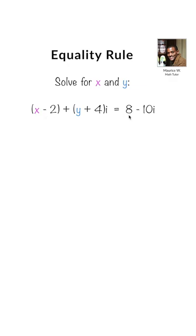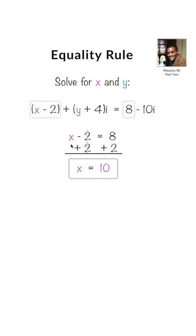The real terms are equal to each other, and the imaginary terms are equal to each other. So we set x minus 2 equal to 8, and then solve for x. So we see that x is equal to 10.